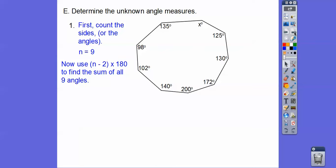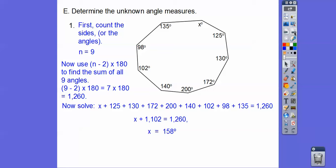So we do 9 minus 2 times 180 right there, and so 7 times 180 is 1260. So we add them all up and solve for x equals 1260, and we should get x equals 158 degrees.